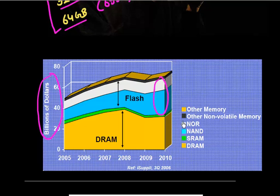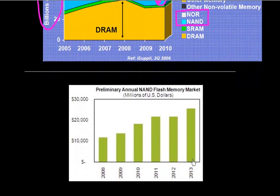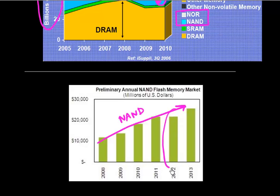Flash memory can be divided into two types: NOR and NAND. Most of this growth came in NAND flash, which is what is used in all these tablets and smartphones. This plot shows how the market for NAND flash memory has grown, reaching north of around $20 billion in 2012.